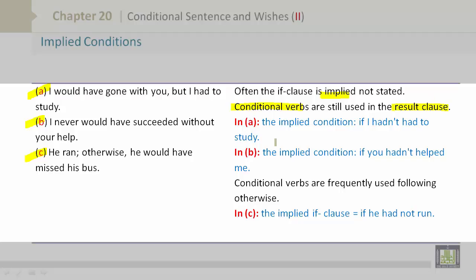Often the if clause is implied, not stated. Conditional verbs are still used in the result clause. In A, the implied condition is if I hadn't had to study. In B, the implied condition is if you hadn't helped me.